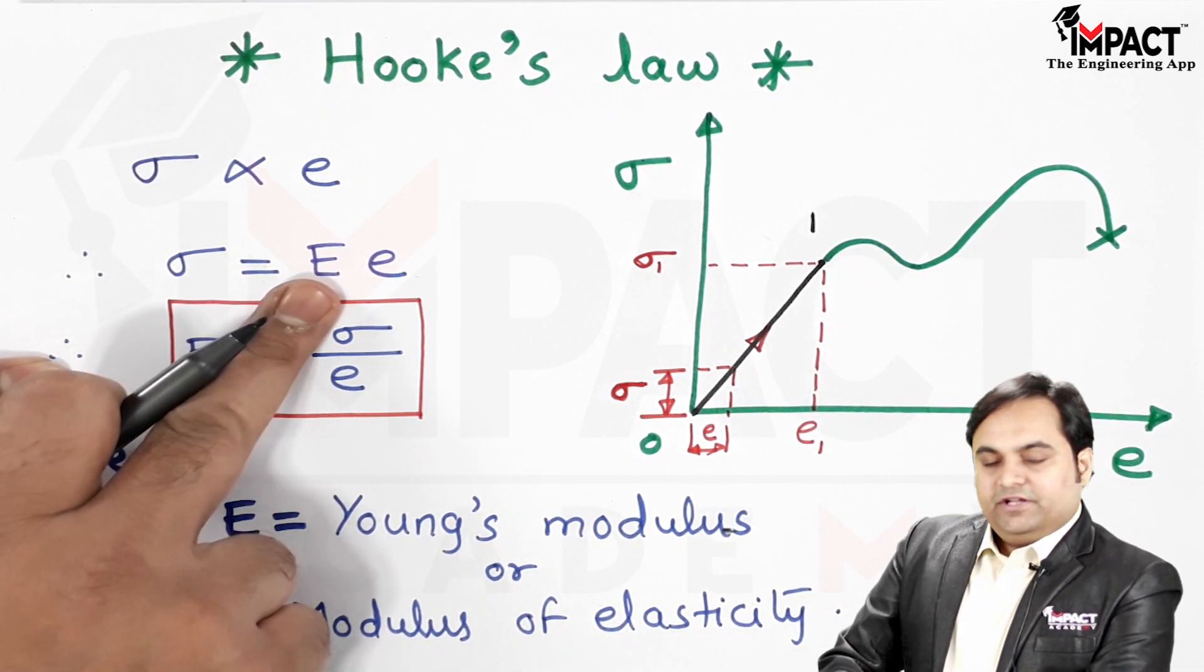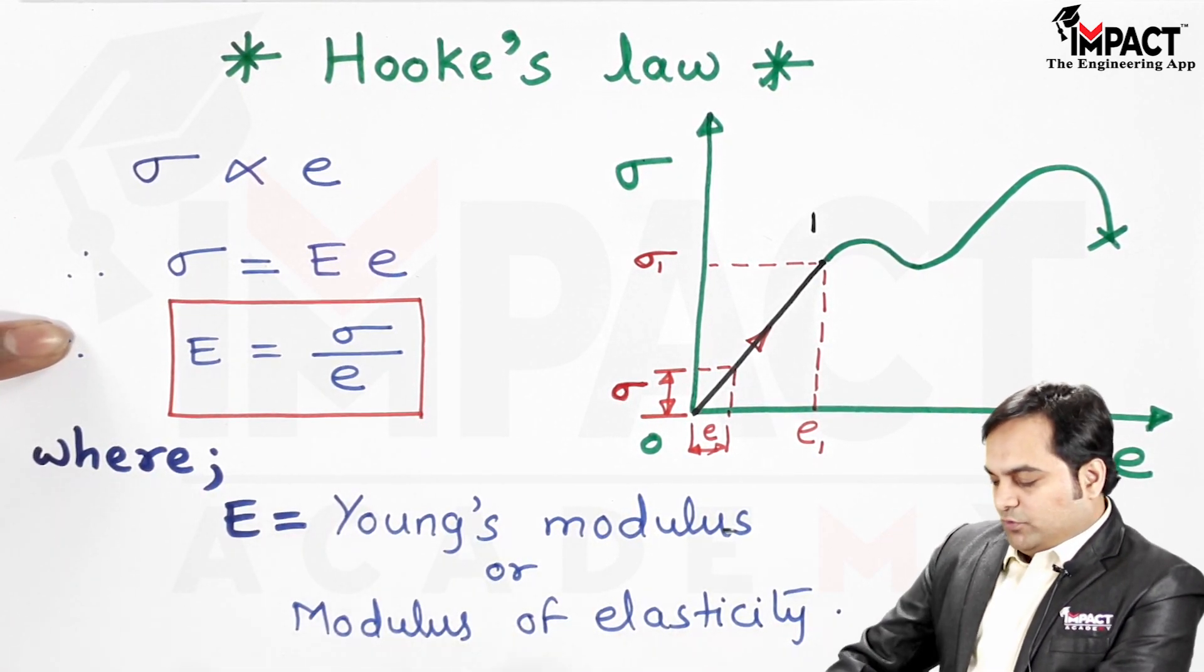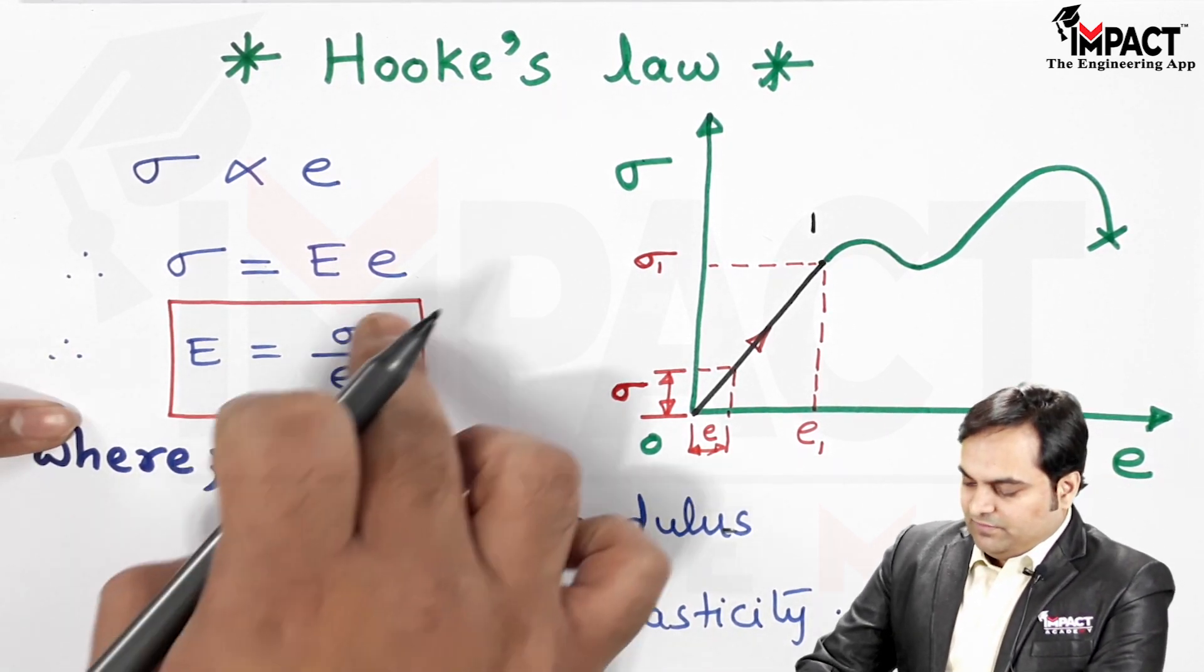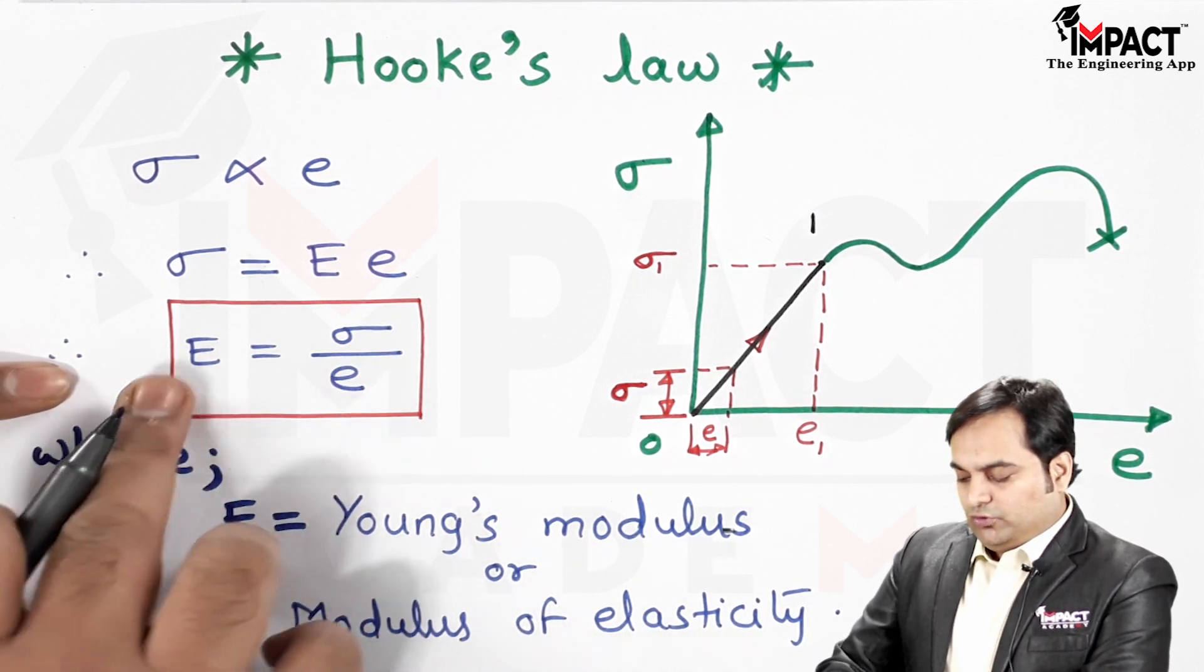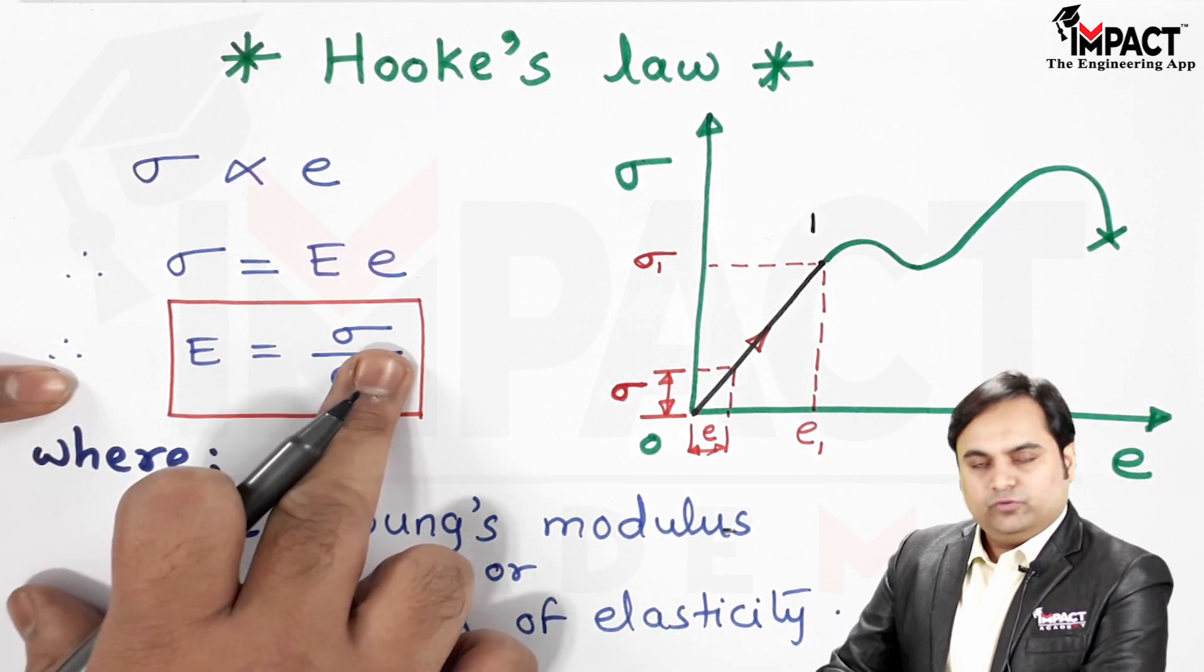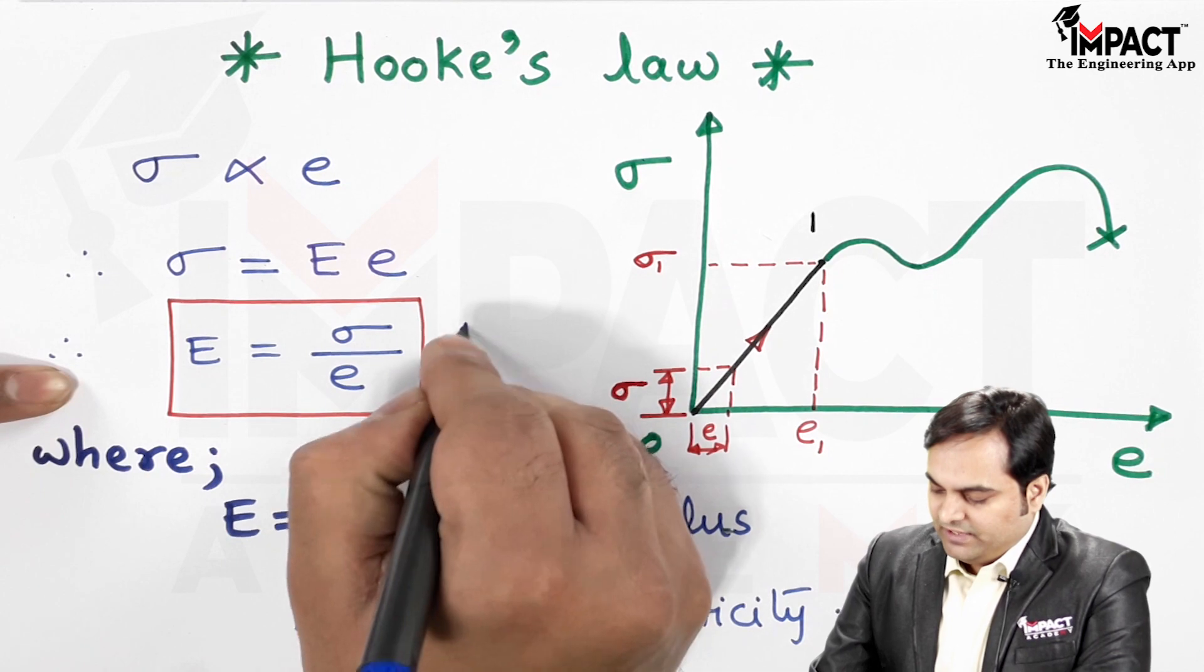This is the proportionality constant E, called Young's modulus or modulus of elasticity, given by the ratio of stress to strain. Since strain doesn't have any unit, the unit of Young's modulus will be the same as the unit of stress, that is Newton per mm².